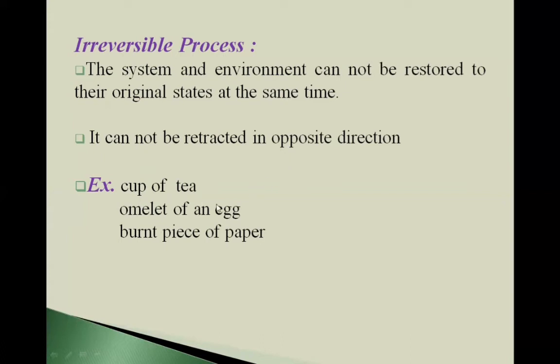First example, cup of tea. Suppose if we have taken tea in a cup, heat from the tea will go outside to the surrounding. After some time, tea will become cold and we will not get again the tea in hot state. Because heat has been given out from cup of tea to surrounding. We cannot reverse that heat again to the cup of tea and make that tea hot.